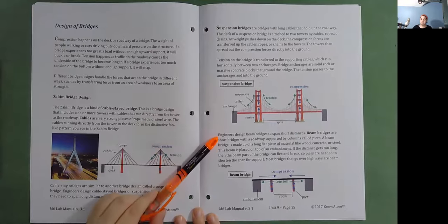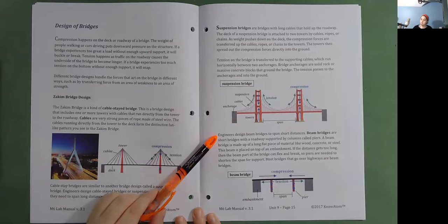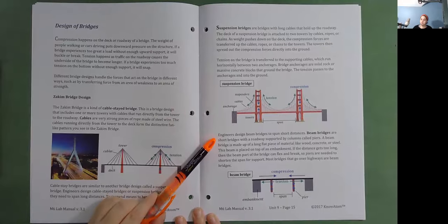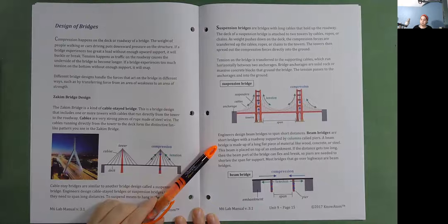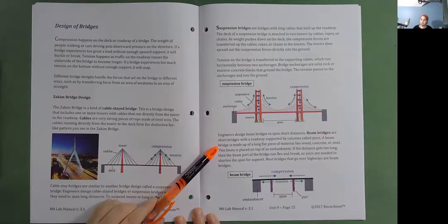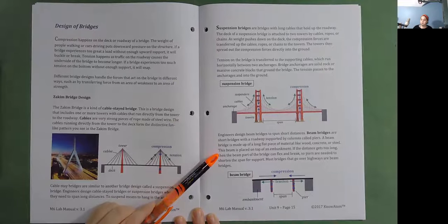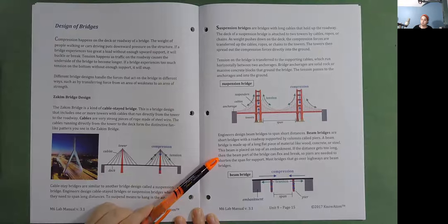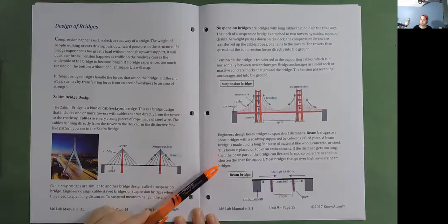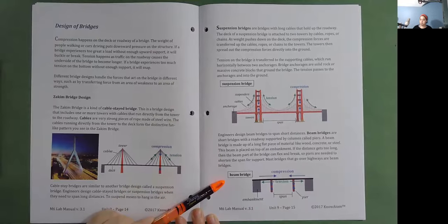Engineers design beam bridges to span short distances. Beam bridges are short bridges with a roadway supported by columns called piers. A beam bridge is made up of a long flat piece of material like wood, concrete, or steel. This beam is placed on top of an embankment. If the distance gets too long, then the beam part of the bridge can flex and break. So piers are needed to shorten the span for support. Most bridges that go over highways are beam bridges. Here's a model of a beam bridge.